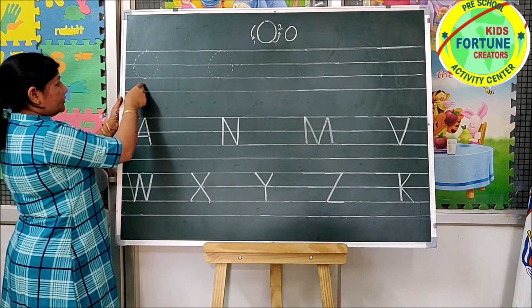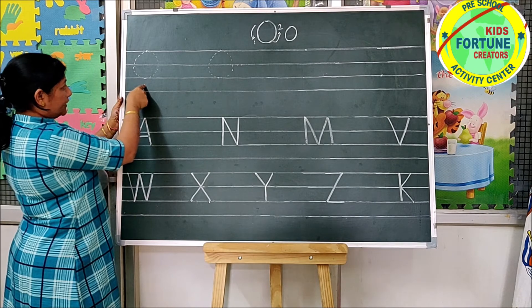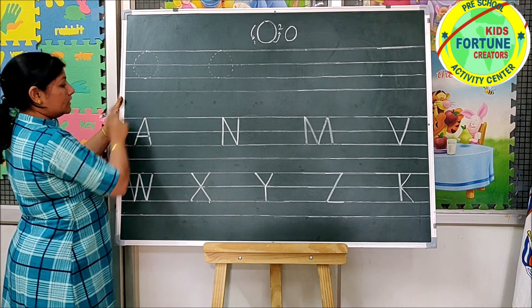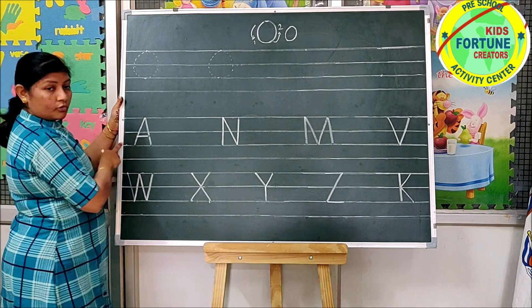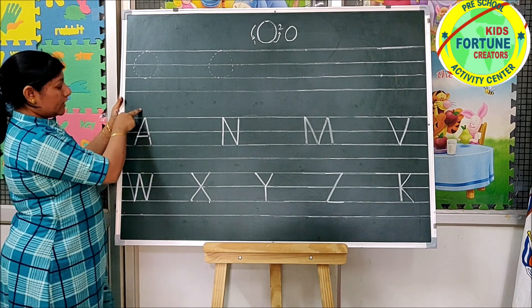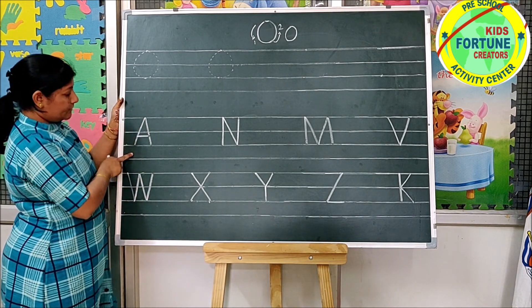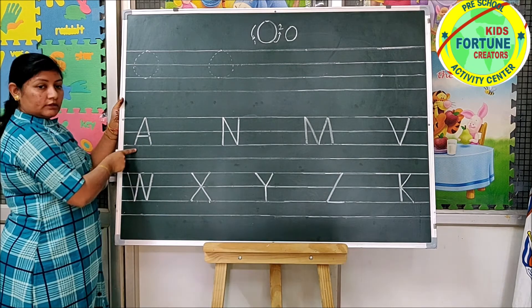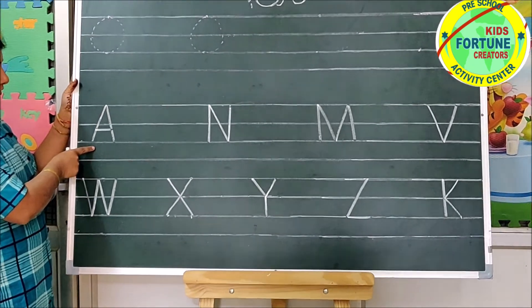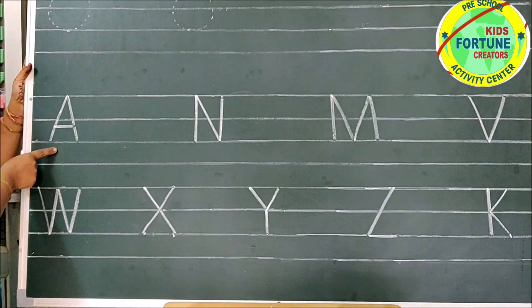Now we will press over the dotted lines. But before writing letter O, we will revise our previous letter. This is letter A.